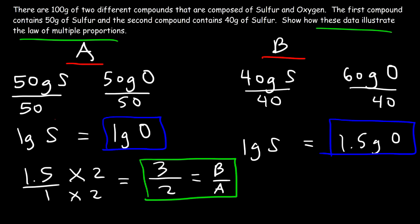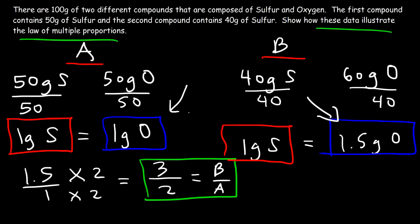That's how you can illustrate the law of multiple proportions. Get one gram of one of the elements, then divide the grams of the second element and reduce it to a whole number. That's it for this video — hopefully you understand how to apply the law of multiple proportions. If you want to find more chemistry videos, you can go to my channel and look for my chemistry playlist. Thanks for watching and have a good day.